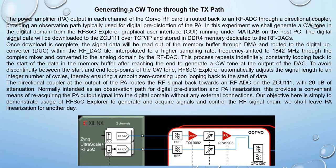We will be generating a CW tone to the DAC TX path from the Ultrascale board. The power amplifier output in each channel of the CORBO RF card is routed back to the RF ADC through a directional coupler, providing an observation path typically used for digital pre-distortion of the power amplifier. The digital signal data will be downloaded to the board over TCP and stored in DDR4 memory dedicated to the RF DAC. Once download is complete, the signal data will be read from memory via DMA and routed to the digital-to-analog converter, then digitally interpolated.